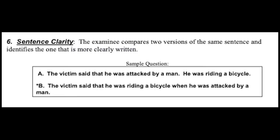The next section is sentence clarity. The examinee compares two versions of the same sentence and identifies the one that is more clearly written. Sentence A: the victim said that he was attacked by a man he was riding a bicycle. Sentence B: the victim said he was riding a bicycle when he was attacked by a man. Out of the two options, sentence B is more clear.